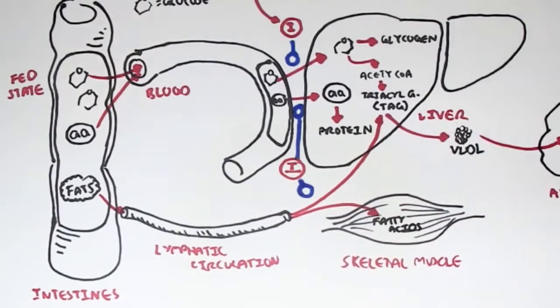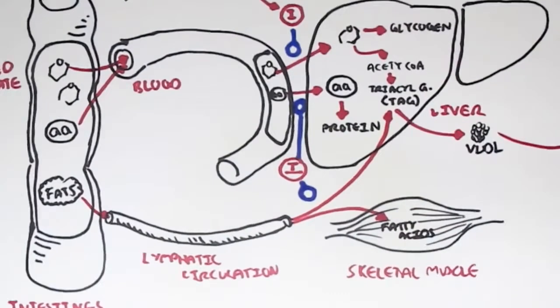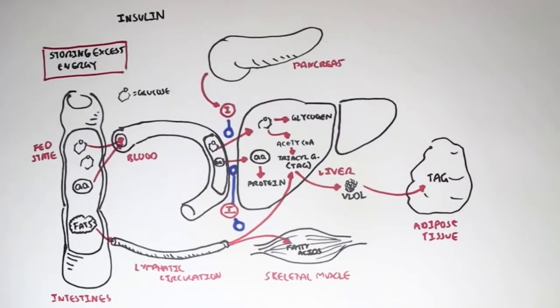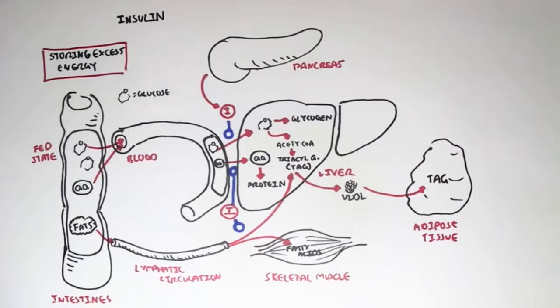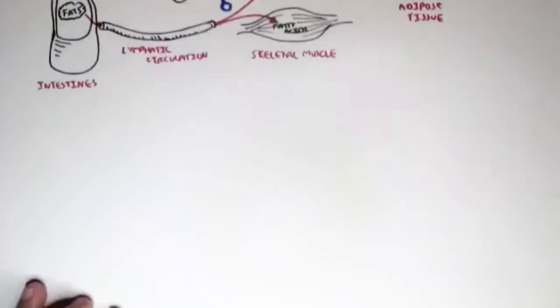Insulin will also promote the synthesis of triacylglycerol from fat in the liver. That was a brief overview of the effects insulin has on the different types of organs in our body. As you can see, insulin has the major role of storing excess energy, such as during the fed state when we have many macromolecules running through our intestines that need storing.